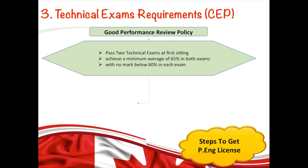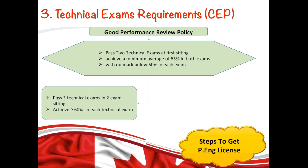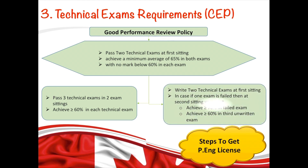You can also be exempted from one exam out of four if you pass three technical exams across two exam settings and achieve 60% or more in each. Additionally, if you attempted two exams in the first setting but failed one, you may still qualify for a good performance review and get exempted from one exam — provided you pass the failed exam with 70% or higher and achieve 60% or higher in a third exam written in the second setting.